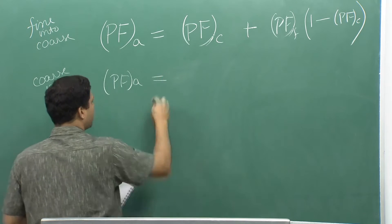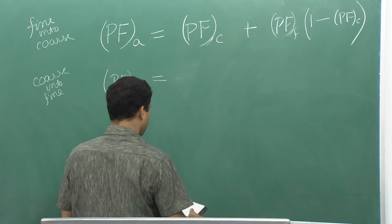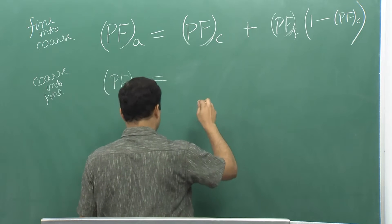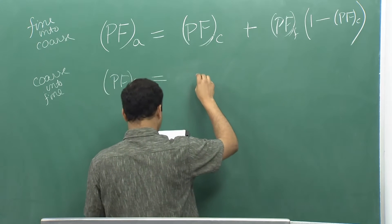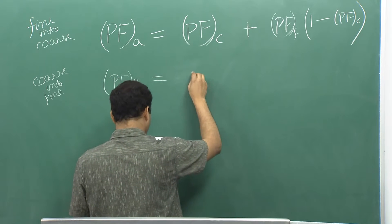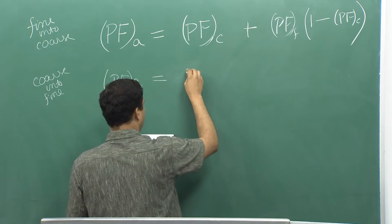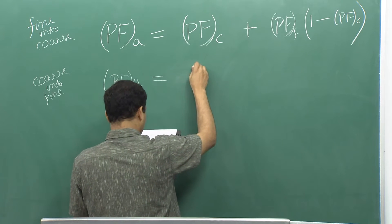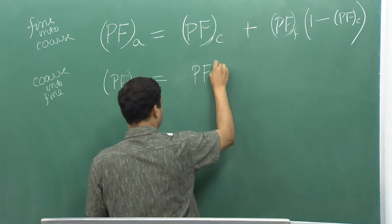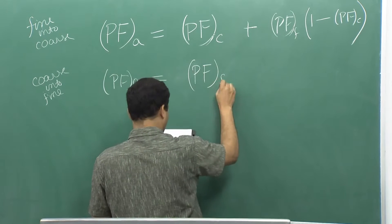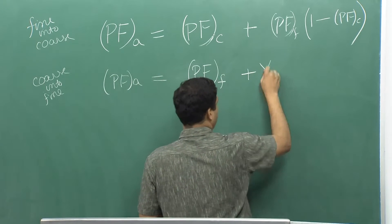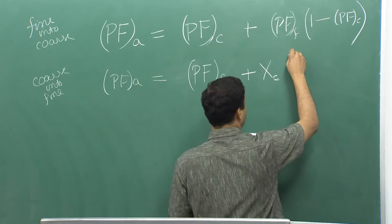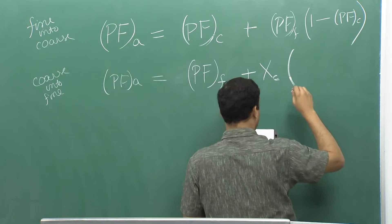For the second case — coarse particles going into fine — we had a relation where the packing fraction is a function of xc, where xc is Vc divided by Vt. This represents what percentage of coarse grains exist with respect to the total volume of grains. The variable xc can range from 0 to 100.